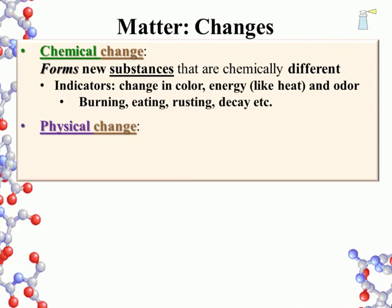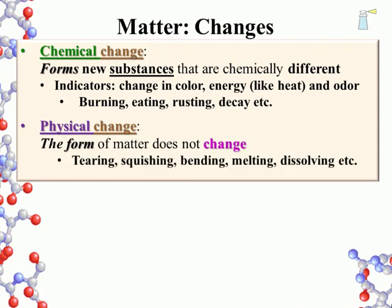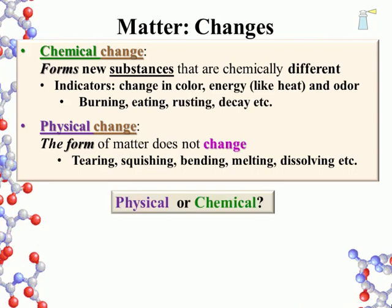The second type of change is physical change. Here the substance is not fundamentally changed. Examples include tearing, squishing, bending, melting — really any of the state of matter transitions — and dissolving. In each example, the matter is the same type of matter after the change as it was before. We will now look at some changes and categorize them as either physical or chemical based on these definitions. Do not worry if you do not know the types of changes; we are quizzing to develop an understanding of change.